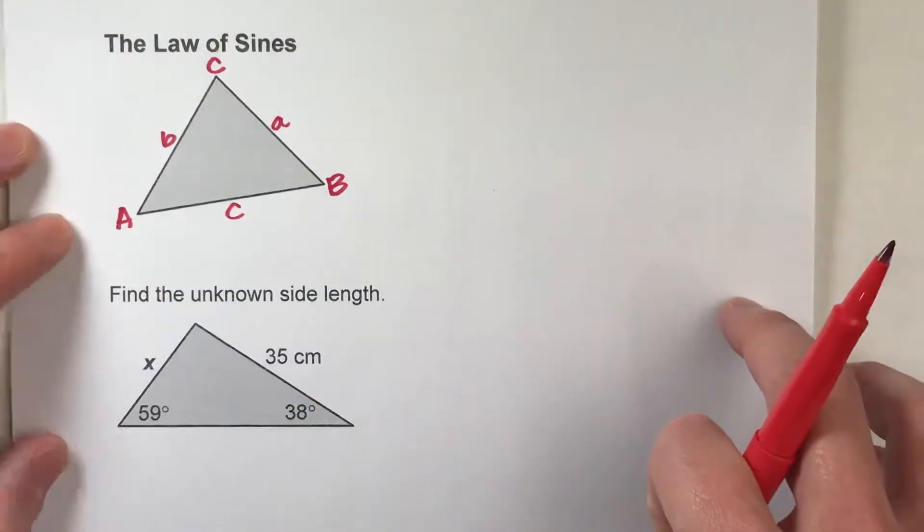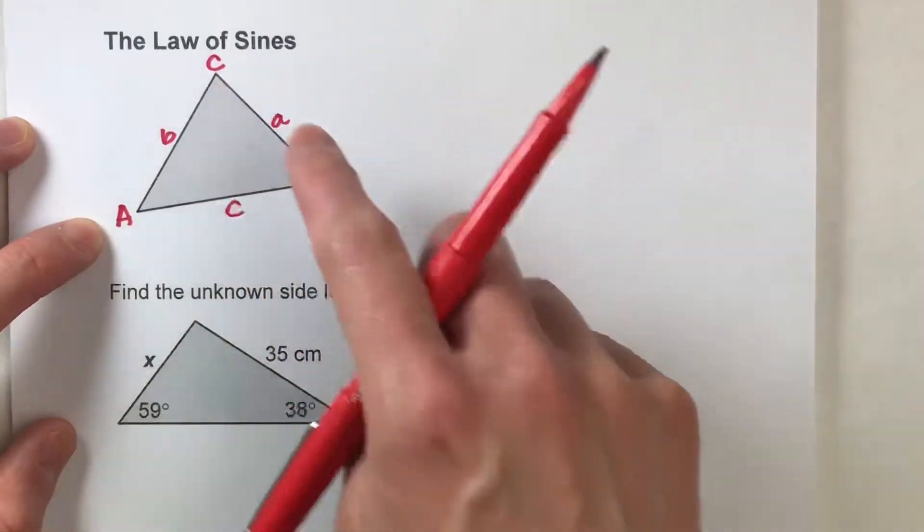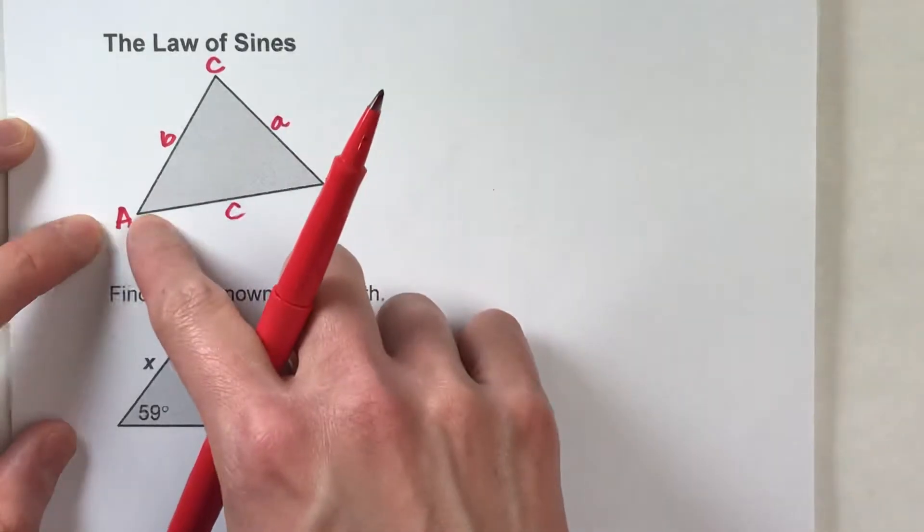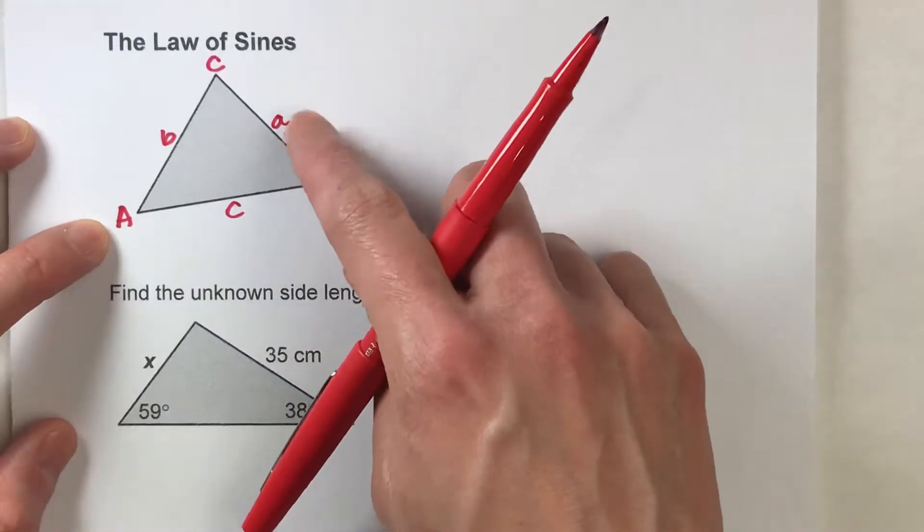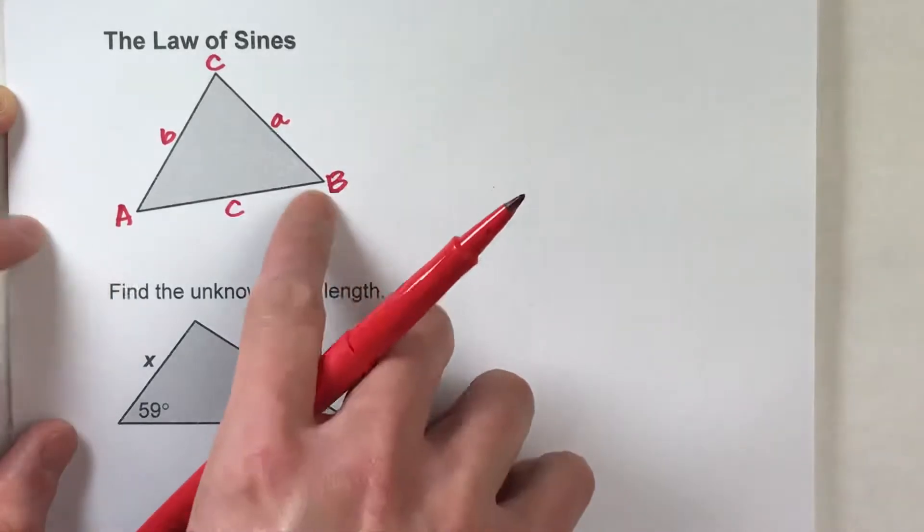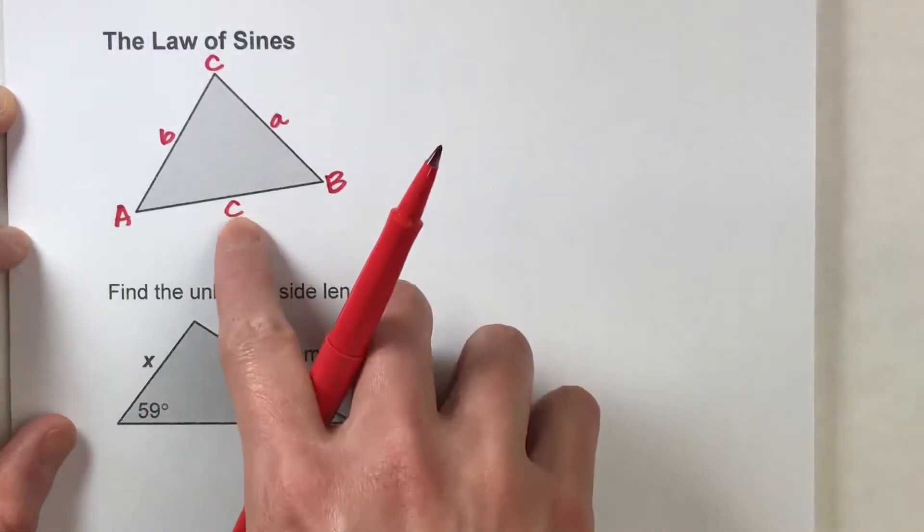Here's how it works. Let's say you're given any triangle. Label the vertices A, B, and C. Now the side across from each angle, I'm labeling it with the little version of that letter. So across from angle A is little a, across from angle B this side is little b, and across from angle C this side is little c.